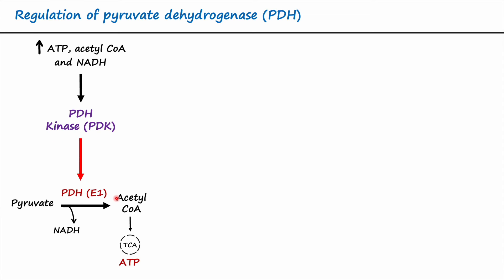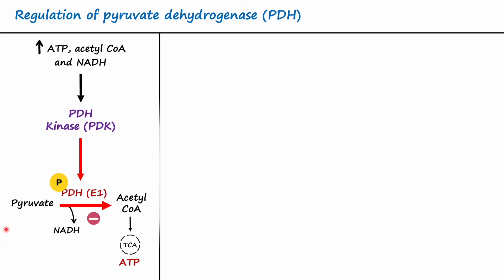When pyruvate dehydrogenase is phosphorylated it is considered inactive, and therefore the reaction of pyruvate to acetyl-CoA is inhibited, resulting in reduced generation of NADH, acetyl-CoA, and ATP in cells. In a second condition, if this reaction is inhibited, it can result in the accumulation of pyruvate in cells.